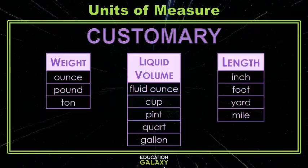We have two primary systems of measure. One is customary, and here we have the different units of measure for weight, liquid volume, and length. It's good to remember which ones are the smaller ones and which ones are the bigger ones. That's going to help you know whether you should multiply or divide when it's time to convert. So let's practice one of those.